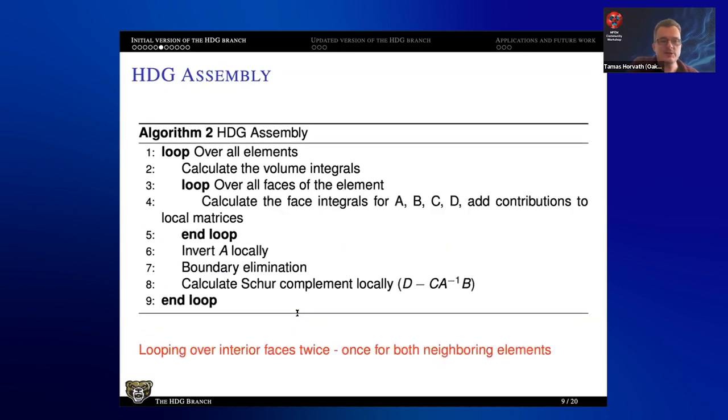Now, if I want to look at the HDG assembly, I have to do it slightly different if I want to be smart and quick. You loop over all the elements and calculate the volume integrals. So far, it's the same as the DG, but then you loop over the faces of the given element and calculate the face integrals that may show up in all four of those matrices in the previous page. Then after that, since you calculated the volume and the face integrals for A, you can invert A locally, do some boundary elimination if you need to, and then you can calculate the Schur complement locally on one single element. And then you can move on to the next element and so on. The advantage is this, that we can calculate the Schur complement locally. The disadvantage is that you are looping over the interior faces twice, once on each neighboring elements.